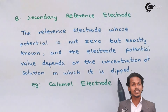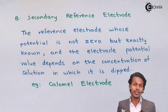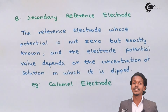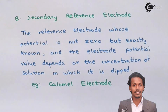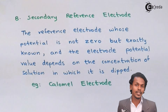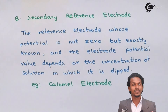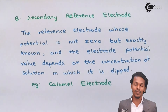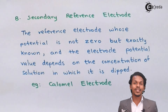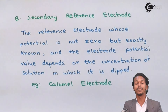The example of a secondary reference electrode is the Calomel electrode. The Calomel electrode consists of KCl solutions, which can be present in different concentrations and will have different EMF values accordingly. Using this, we can calculate the cell potential or standard cell potential of the other electrode. These were the two types of reference electrodes.